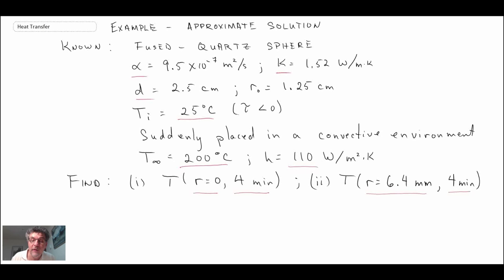We're told to use the approximate solution techniques. Let's begin by drawing a schematic. All we have is our sphere with r₀ radial location r. We're interested in what's going on at 6.4 millimeters, and this is exposed to some convective environment.